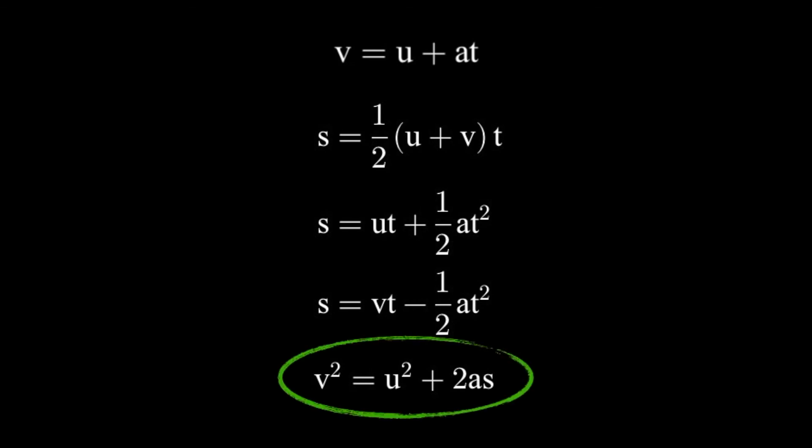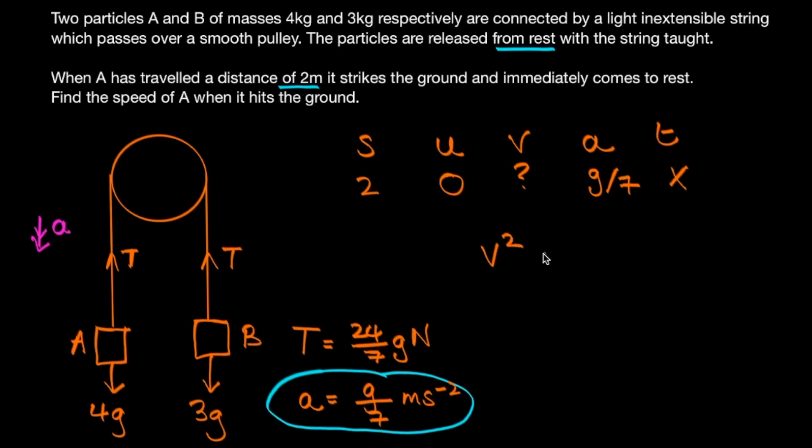It is of course v squared equals u squared plus 2as. And so if we plug in our values for u, a, and s, that will give us v squared equals 0 plus 2g over 7 times 2.